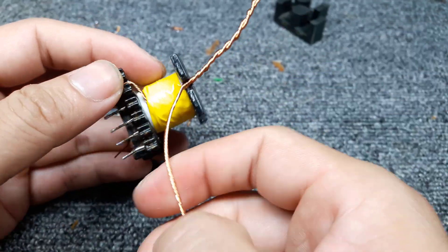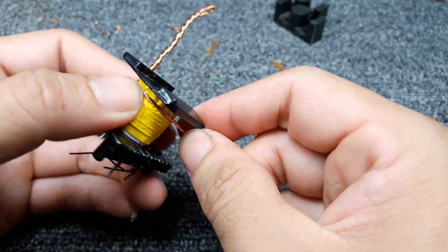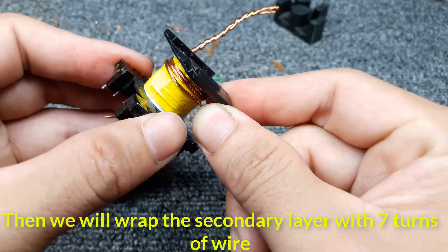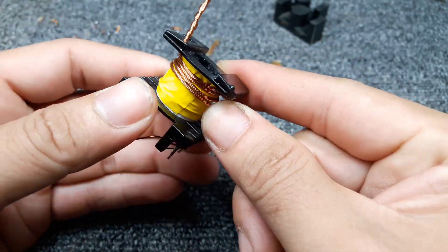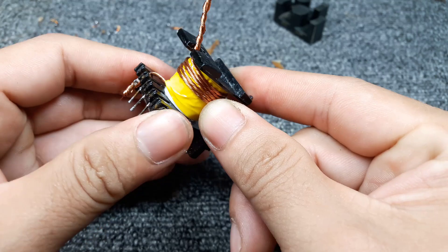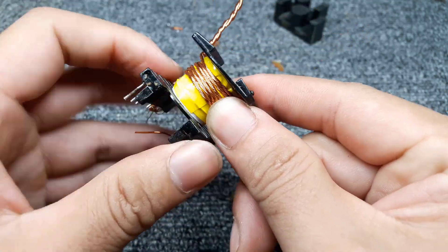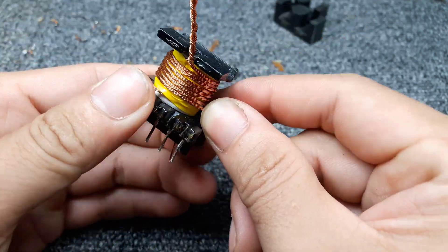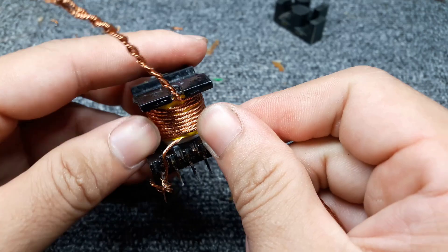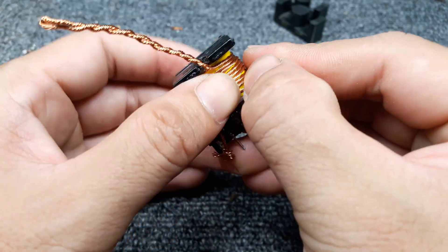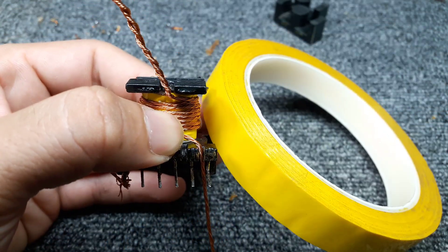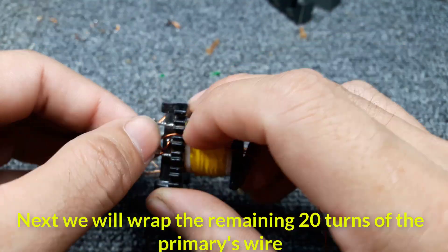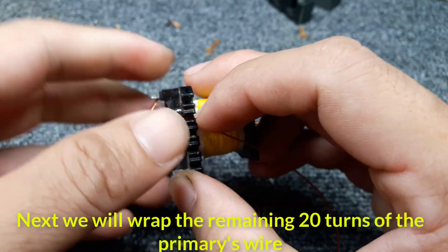Once done, we have to wrap one layer of insulation, then we will wrap the secondary layer with 7 turns of wire. Once done, we have to wrap one layer of insulation. Next, we will wrap the remaining 20 turns of the primary's wire.